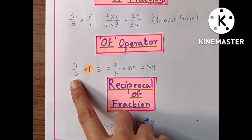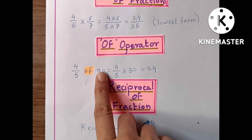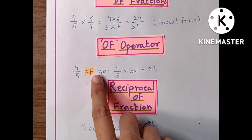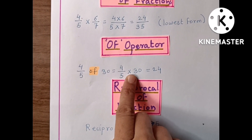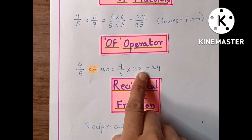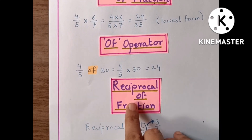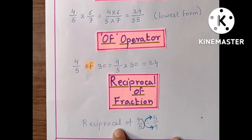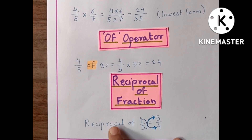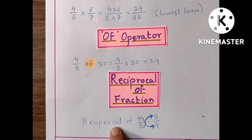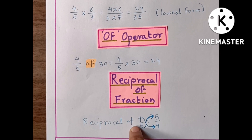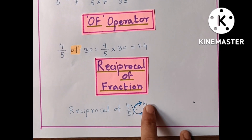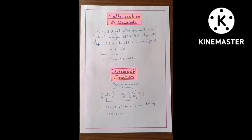The 'of' operator — 'of' means 'into', or in other words, multiplication. So 'of 30' means multiplied by 30, and here is the product. Then reciprocal of fraction — reciprocal means inverse. For example, the inverse of 4/5 is equal to 5/4. The next page is multiplication of decimals.